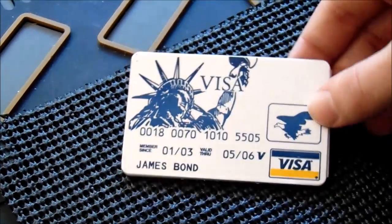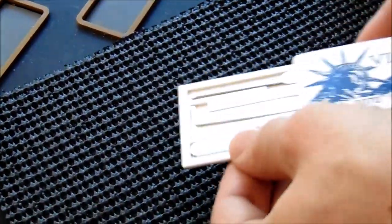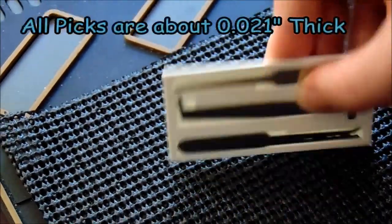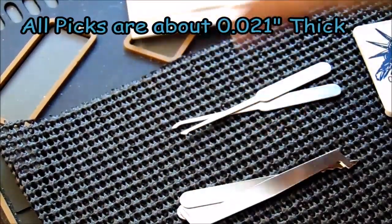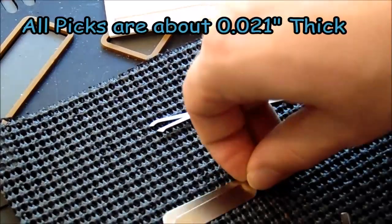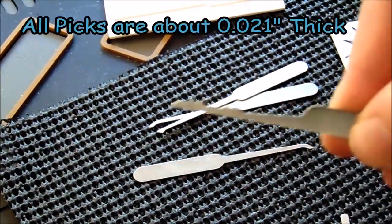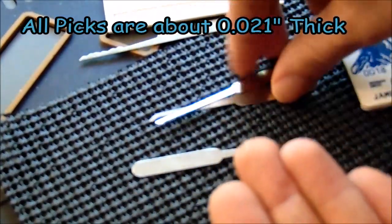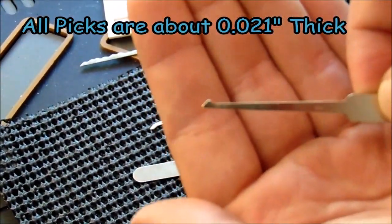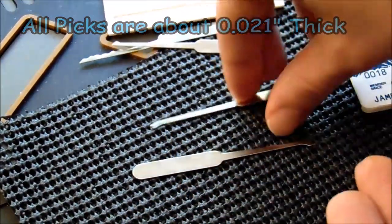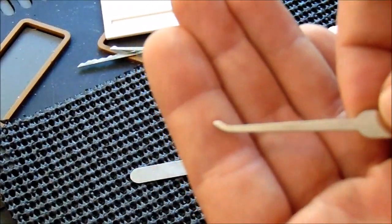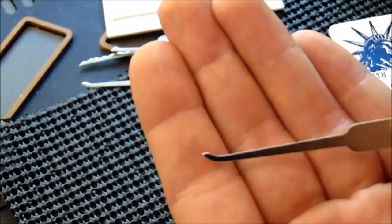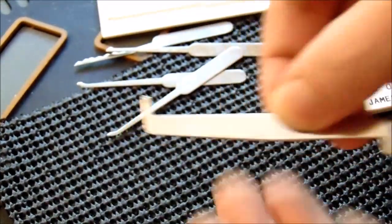Now I'm just going to open it up and show you what's inside it. Inside we have various set of picks. We have an L rake or a city rake, we have a half diamond, two hooks, and our one tensioning tool.